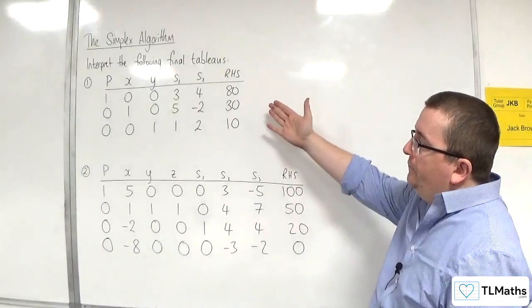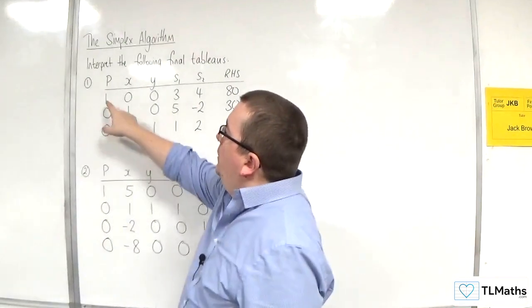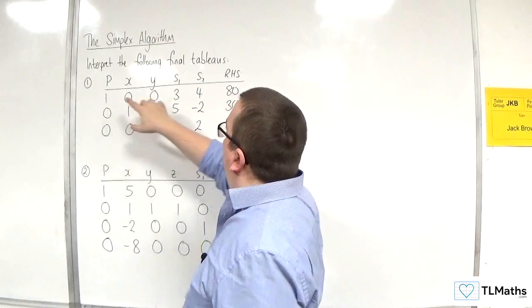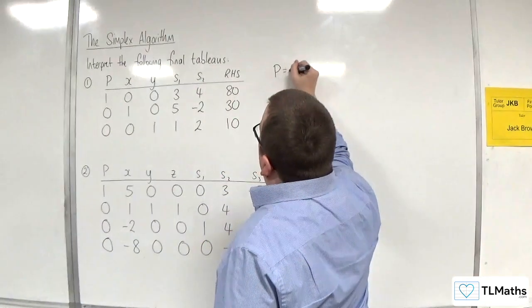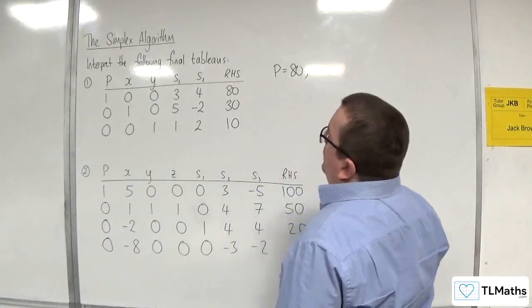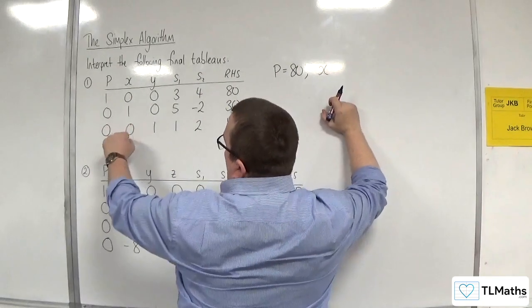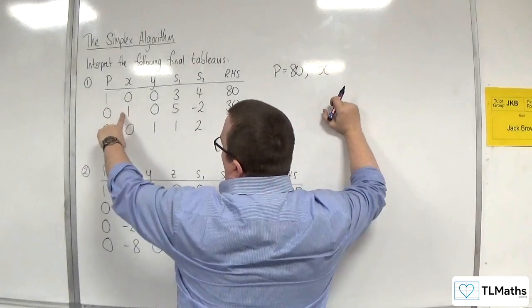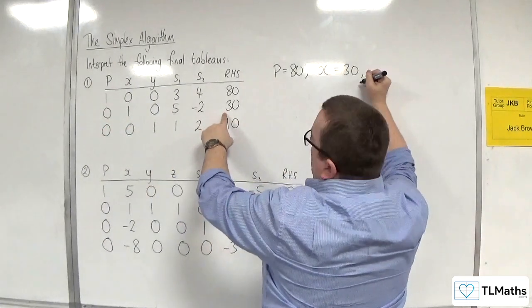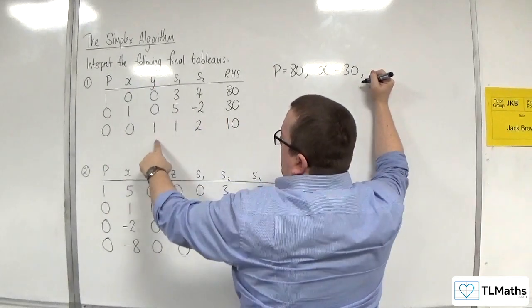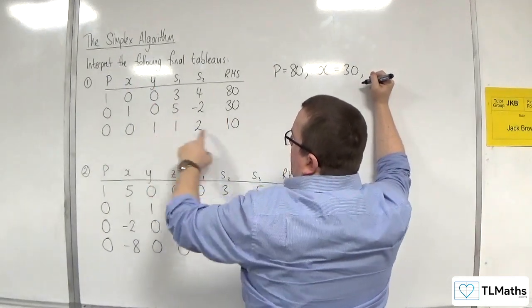So for the first one, we can see that we've got 100, so P is basic, and P can be read off directly as 80. Then X is basic, because you've got 0s and then the 1, so X is going to be equal to 30. Y is basic, 0, 0, 1, and that's going to be equal to 10.